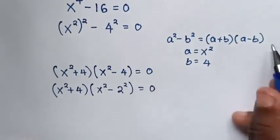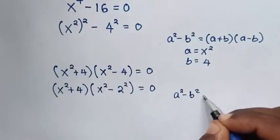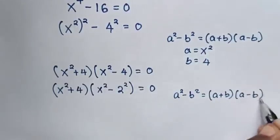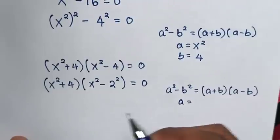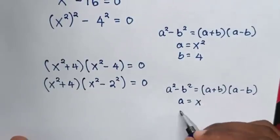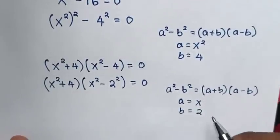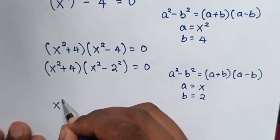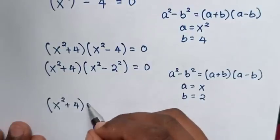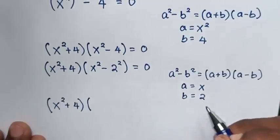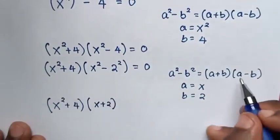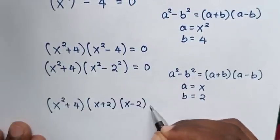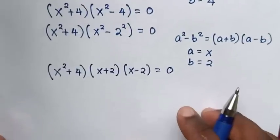We apply the same rule a² - b² = (a + b)(a - b) again, where a = x and b = 2. So the equation becomes (x² + 4)(x + 2)(x - 2) = 0.